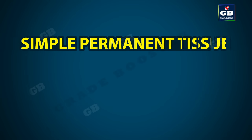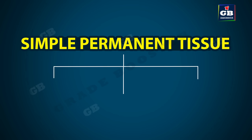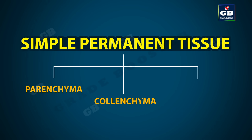Now let's see the simple permanent tissue. Simple permanent tissue is of three types: 1. Parenchyma, 2. Collenchyma, and 3. Sclerenchyma.